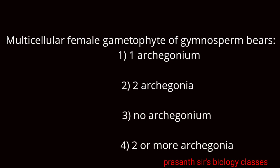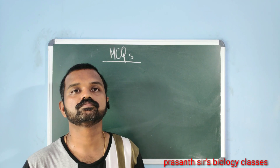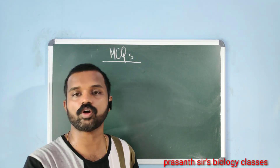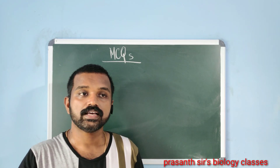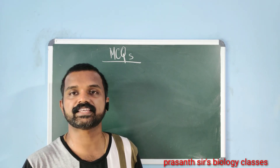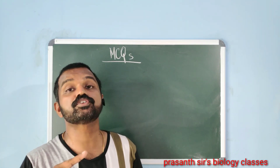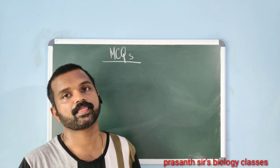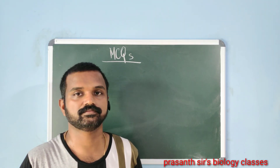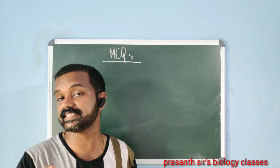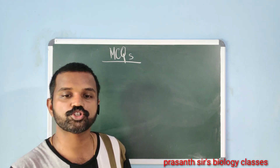Multicellular female gametophyte of gymnosperm bears how many archegonia? The options given include one archegonia, two archegonia, or two or more archegonia. The point stated in theory is that one of the megaspores develops to form a female gametophyte which bears two or more archegonia. Archegonia is the sex organ in gymnosperms.